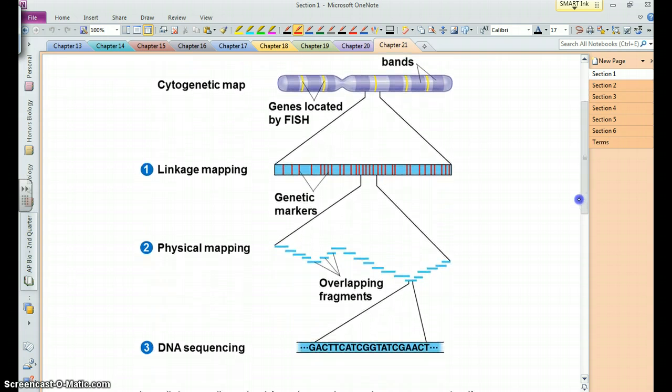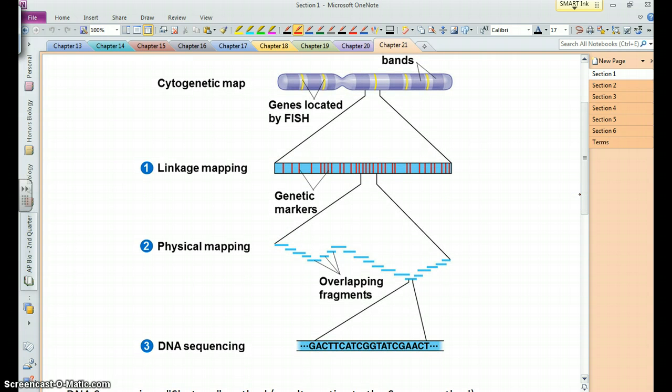Then the next level is what we call physical mapping and that looks at distances between the different genes and physical locations on the chromosomes. And it then incorporates the sequencing of those different fragments of the chromosomes.